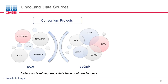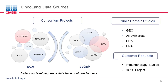Oncoland features a tremendous amount of data. The data source can be grouped into three main categories, with the majority derived from consortium projects such as TCGA, GTAC, ICGC, and TARGET datasets, managed by two large data warehouses: EGA and dbGaP. The second category comes from thousands of individual studies deposited in public domain repositories such as GEO, ArrayExpress, and SRA. The Oncoland curation team has spent a lot of time extracting project and sample level information using Omicsoft internal controlled vocabularies to make datasets consistent and comparable across sources.